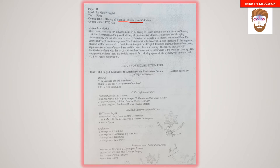Now let's look at the second paper for BA major English first year. The course title is History of English Literature and Criticism. Book 2 is about the History of Literary Criticism and Book 3 is about A Brief History of English Literature. These two books are combined together to make Paper 2.